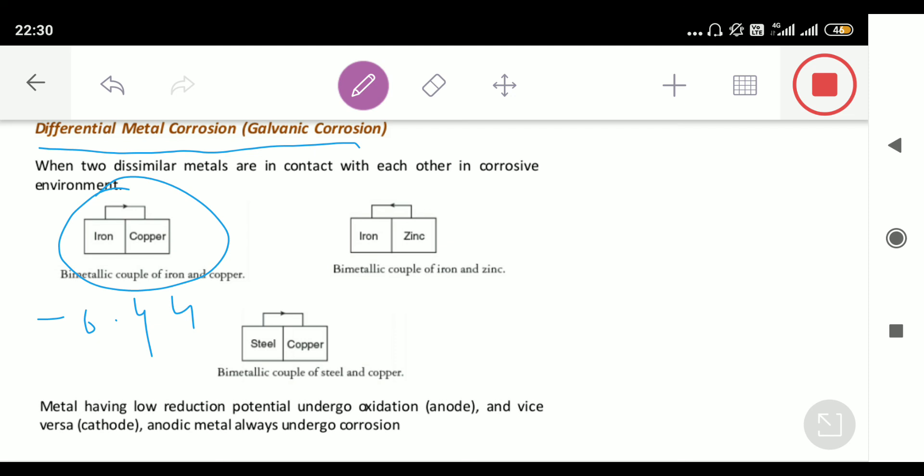We can prevent the corrosion of iron by putting it in contact with a metal which has less EMF. We can see from here where zinc has minus 0.76 volt and iron has minus 0.44 volt. In this case, zinc has less EMF so zinc will act as anode.